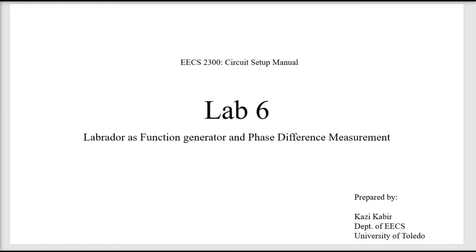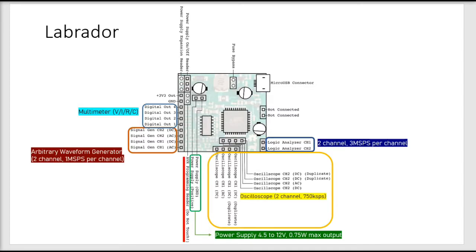This is our Labrador circuit. All this time we have been using the DC power supply, but today in order to get to know the function generator, we are going to use sinusoidal waves, triangular waves, or square waves. For that we are going to need the signal generator channels.